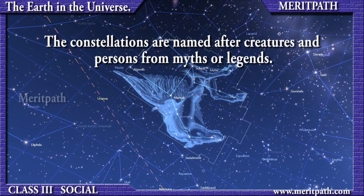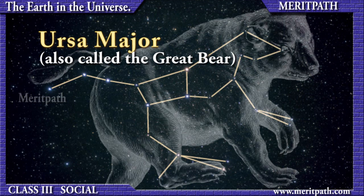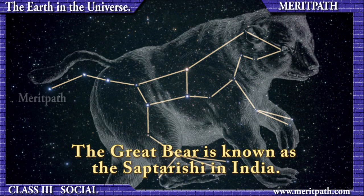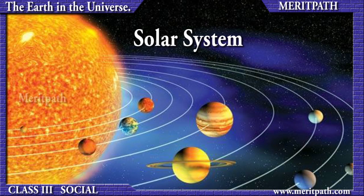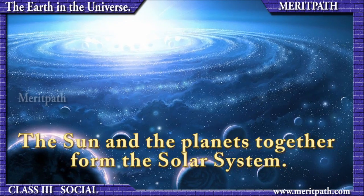These groups of stars are called constellations. The names of these constellations are based on creatures and persons from myths or legends. Some of the famous constellations are Leo, Ursa Major — also known as the Great Bear — and Orion. In India, we call the Great Bear Saptarishi.